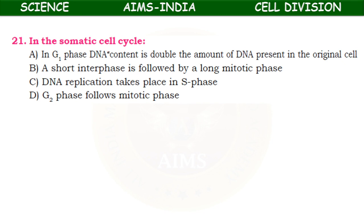In the somatic cell cycle, what happens in G1 phase — DNA content is double, a short interphase followed by a long mitotic phase, DNA replication takes place in S phase, or G2 phase follows mitotic phase? The correct answer is: DNA replication takes place in the S phase.